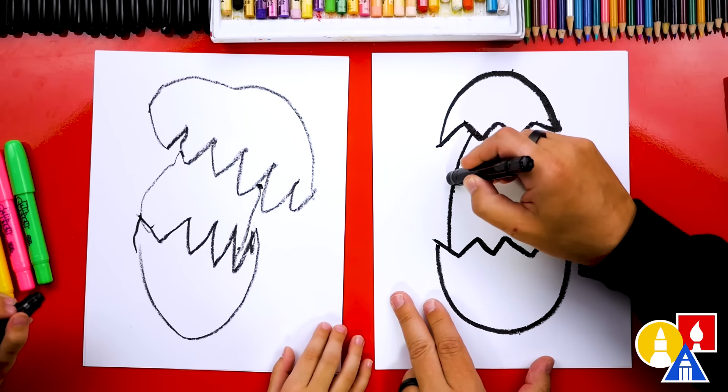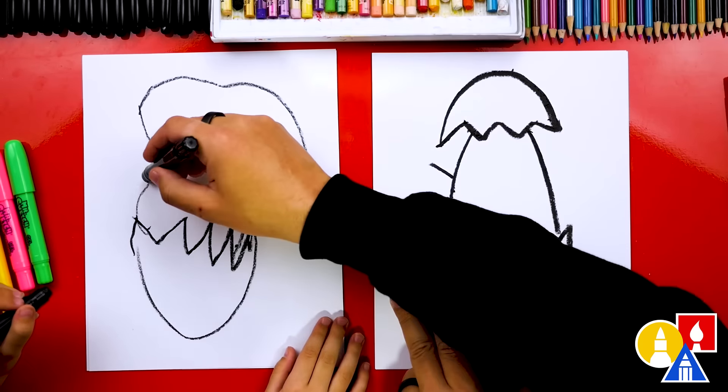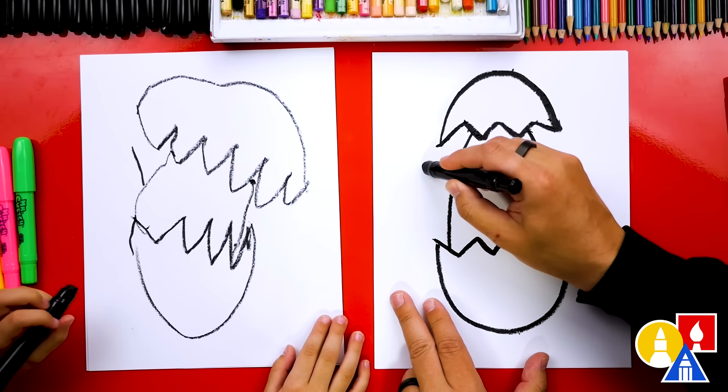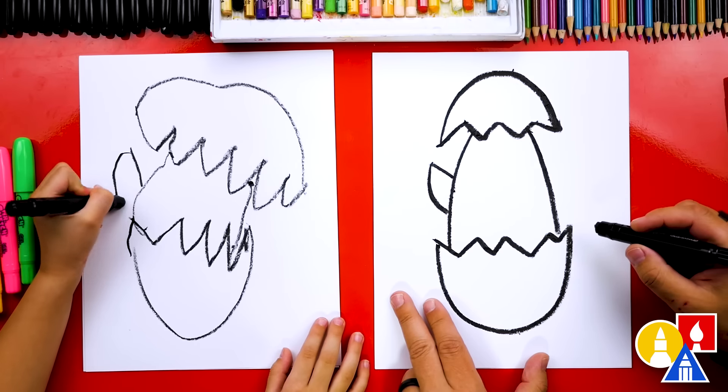Now, let's draw the little wings. We're going to draw a diagonal line that comes out to the side right here. Yay. Yep. And then we're going to draw it curving down. For the wing.